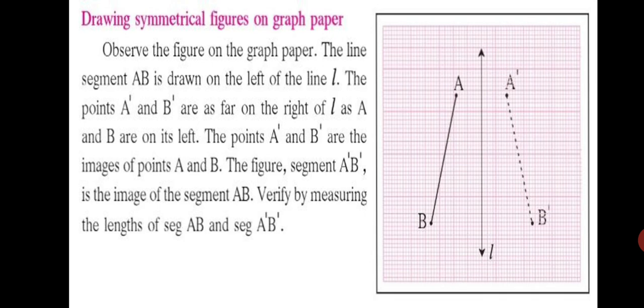So you will see that A prime is exactly at the same distance from line L as point A is from line L. Similarly, B prime is at the same distance from line L as point B is from line L.